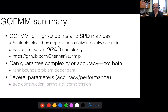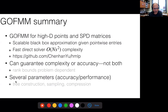Summary of GoFMM: it approximates generic SPD matrices. We have open-source code. The complexity to factorize is N times S-squared, where S is the rank of the off-diagonal blocks. We can guarantee complexity or accuracy — not both — and that's the case for all matrix approximation schemes unless you have more information about the matrix. There are several parameters regarding tree construction, sampling, oversampling, and adaptivity, making it somewhat finicky.